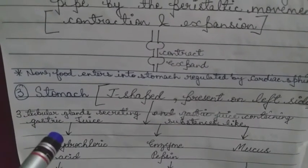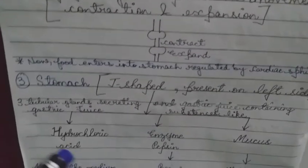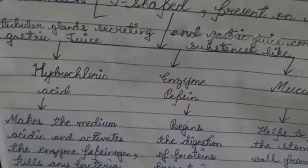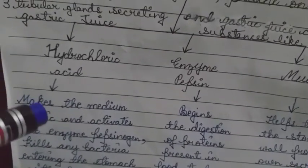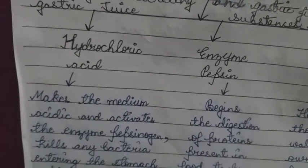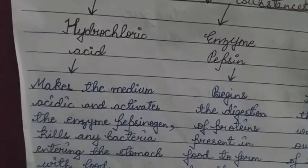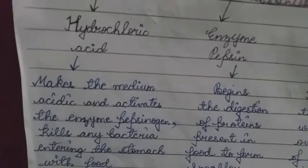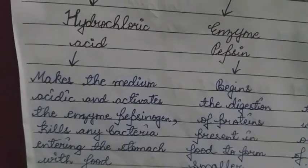The stomach has three tubular glands that secrete gastric juice. Gastric juice contains: number one, hydrochloric acid (HCl). HCl has three functions: to make the medium acidic, to activate the inactive enzyme pepsinogen — note that the suffix '-gen' is used for inactive enzymes.